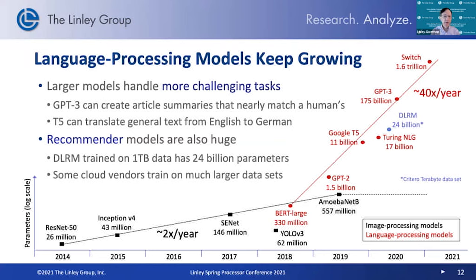The biggest growth we've seen — explosive growth over the last few years — has been in natural language processing models. These models handle more challenging tasks than image recognition: translating from one language to another, analyzing written documents, creating written text. These are tremendously difficult tasks. To do them well, researchers have been increasing the size of the model into billions of parameters. In fact, just recently Google announced the Switch model, which has over a trillion parameters that they're using to solve some of these tasks. The size of these models just keeps growing exponentially, with no sign of stopping. The only limit is the compute power that can be poured into training and executing them.